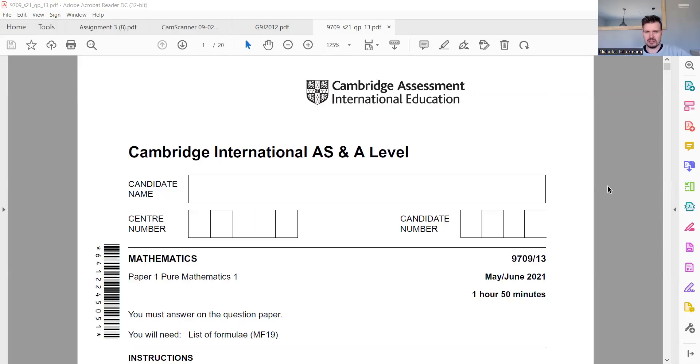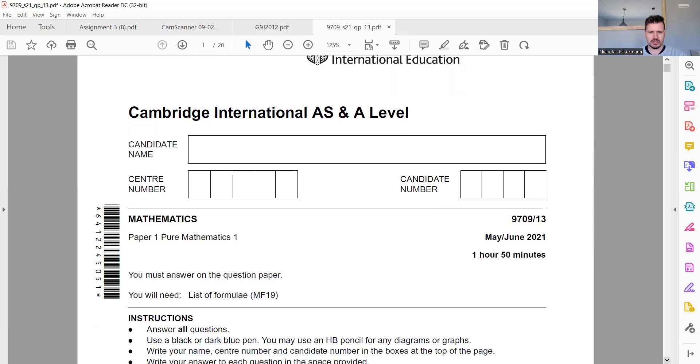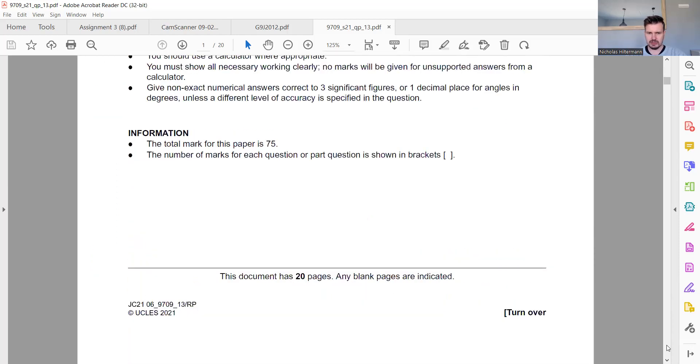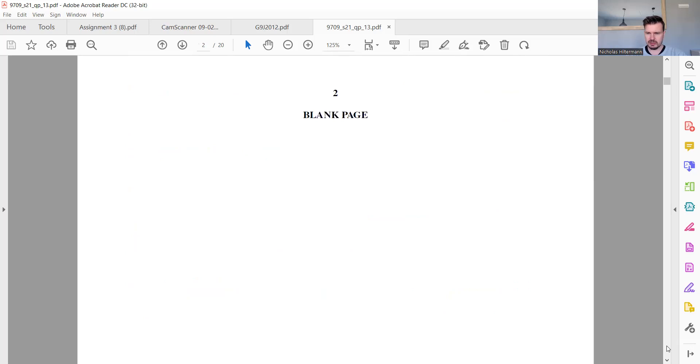Okay, so today we are going to look at a Cambridge AS level past paper from last year, 2021 May, June. So this time last year, this is what the AS students were writing. So let's just jump straight into it.